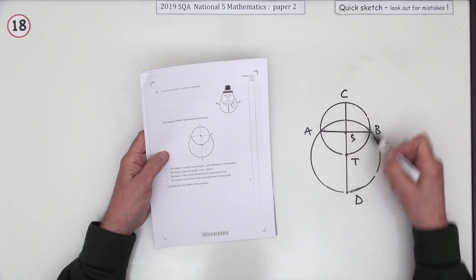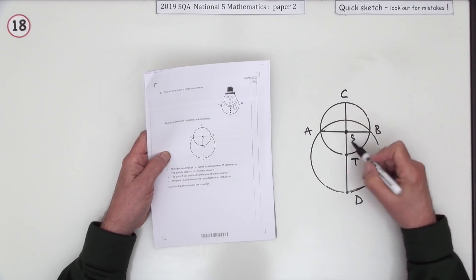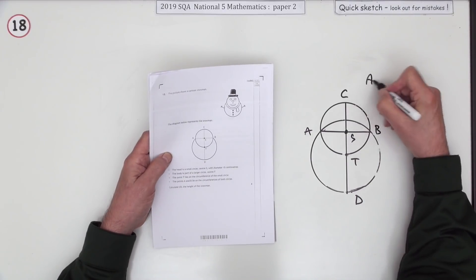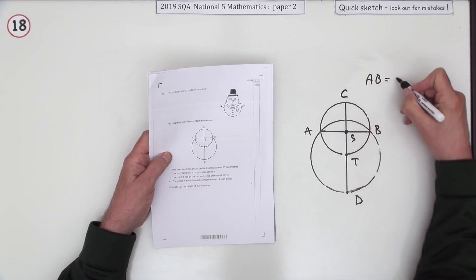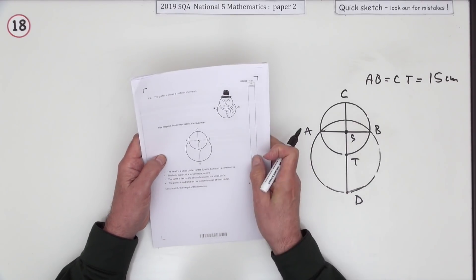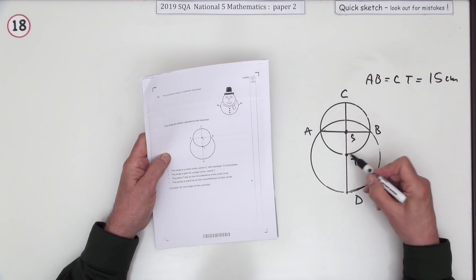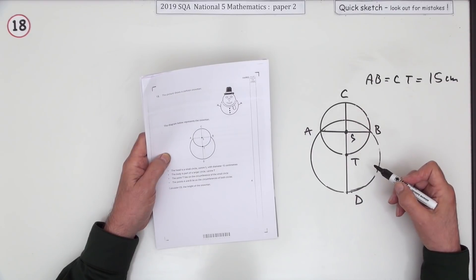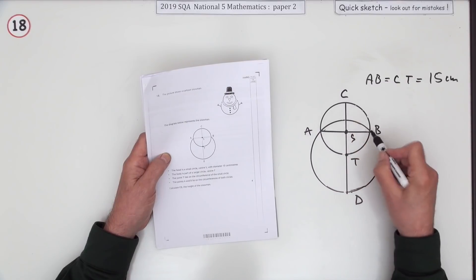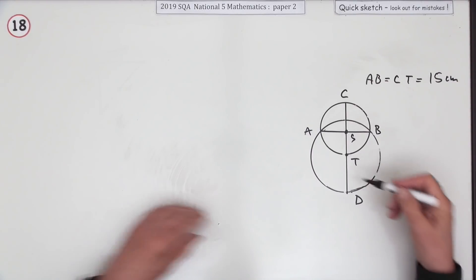The head is a small circle with its centre marked and its diameter is 15, so all lines through the centre are diameters — AB as well as CT equals 15 centimetres. The body is a larger circle of centre T. The point T is on the circumference of the small circle, and the points A and B are the points of intersection of the two circles.